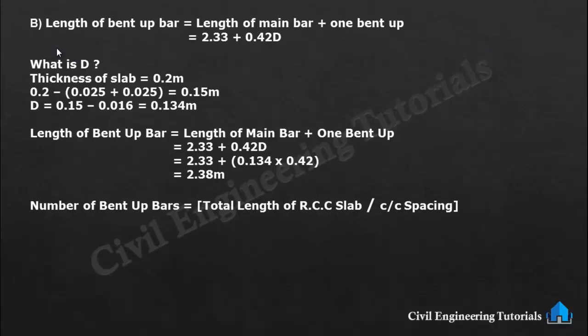Now calculate number of bent-up bars. Formula: total length of RCC slab divided by center-to-center spacing. So 5.6 divided by 0.1 equals 56 numbers.